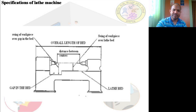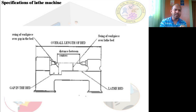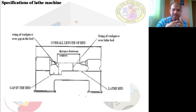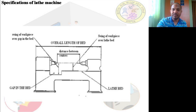There is also a small gap in the bed to allow chips to fall through. During material removal, chips continuously flow out of the workpiece and must not remain in contact with it, because metal-to-metal friction generates very high temperatures, making the chips very hot. We also apply coolant during machining, and the coolant must be able to flow away. The gap in the bed serves this purpose. The swing of the workpiece over the gap in the bed is also one of the specifications.